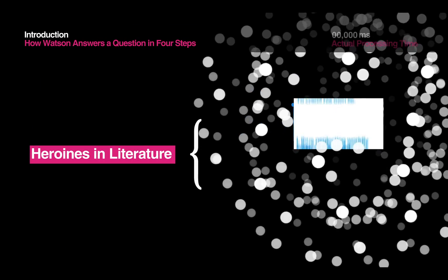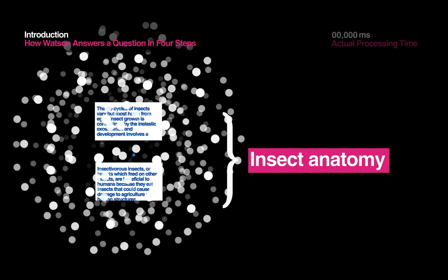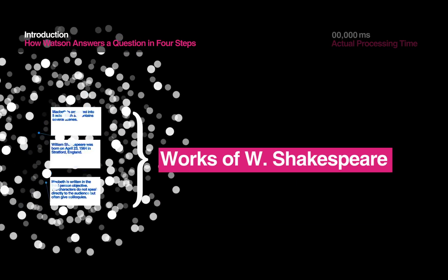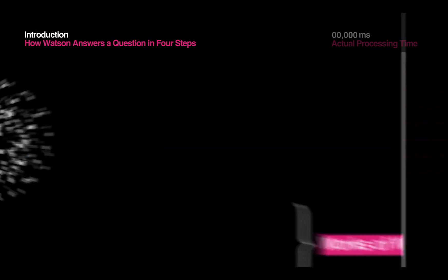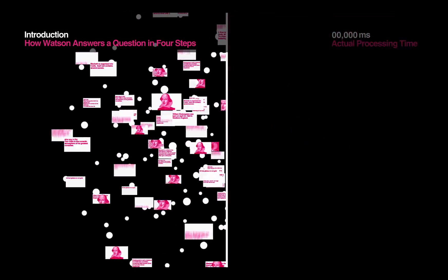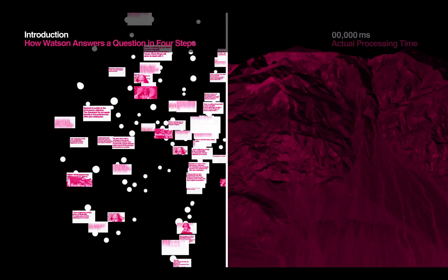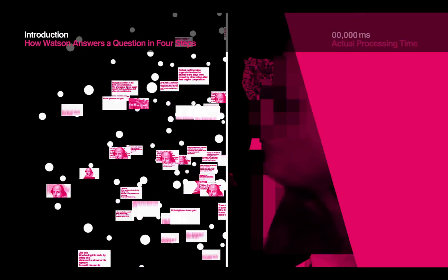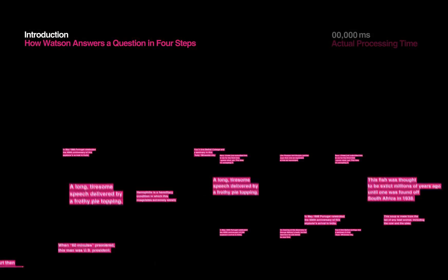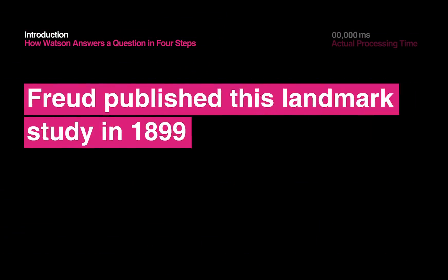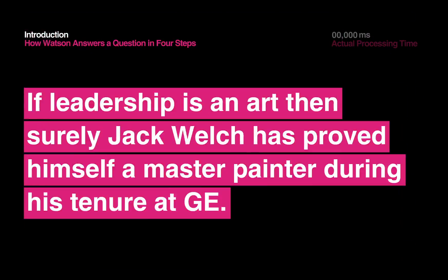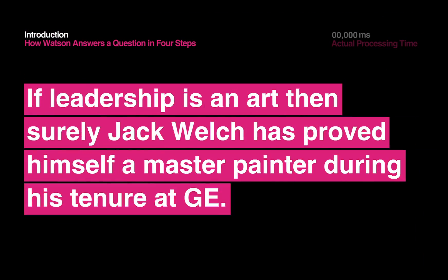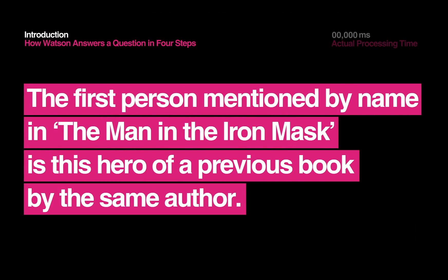Watson needs to absorb so much information because Jeopardy! is open domain, which means it can ask a question about anything. So Watson reads, analyzes, and tries to understand millions of books and documents — content written in the way humans communicate — before it gets anywhere near a game board. Never before in the history of computing has a machine been able to so precisely answer such a wide breadth of questions in such a short time. Let's see how Watson does it.